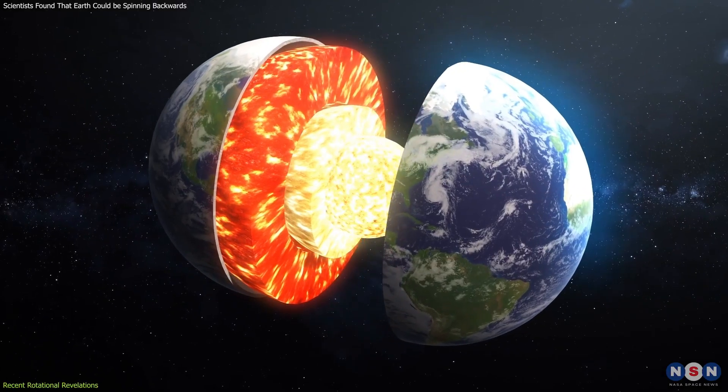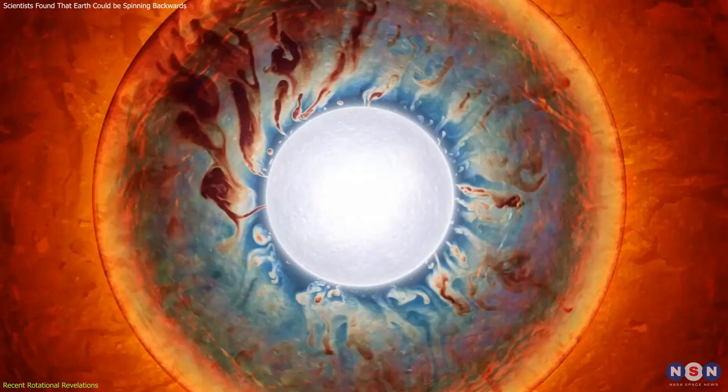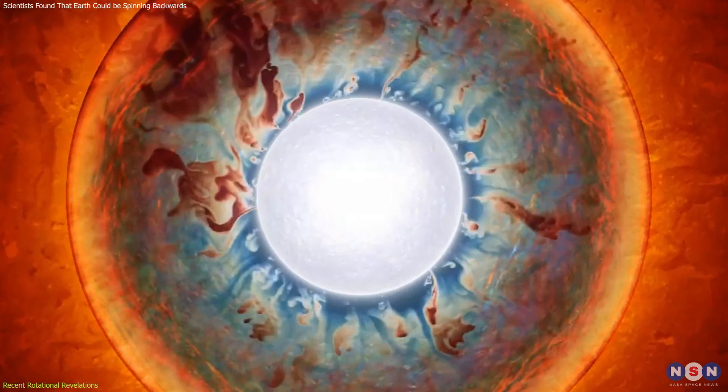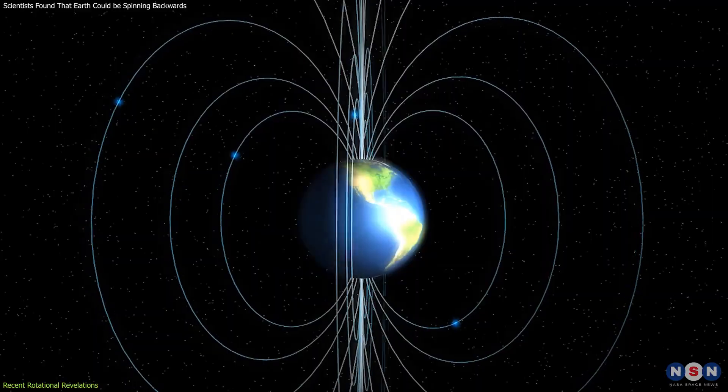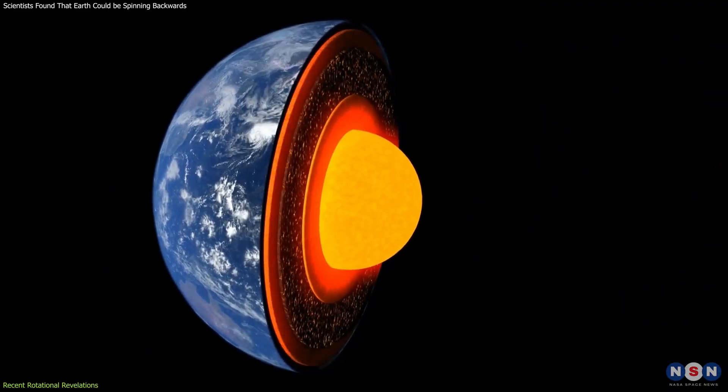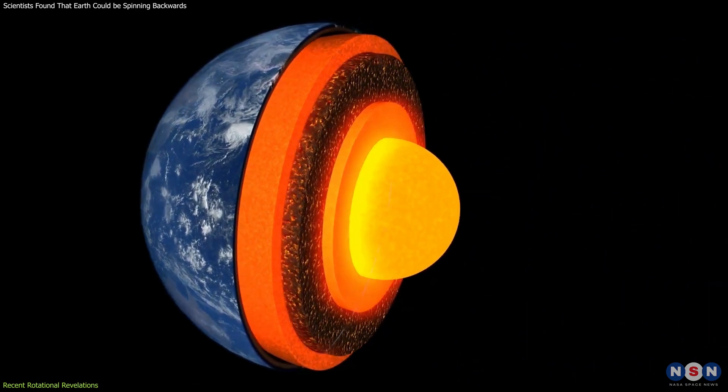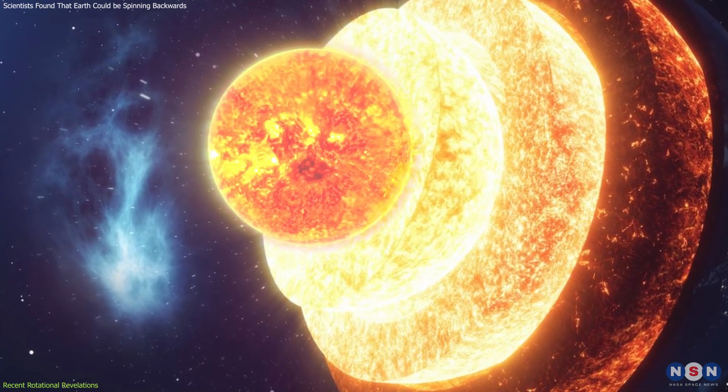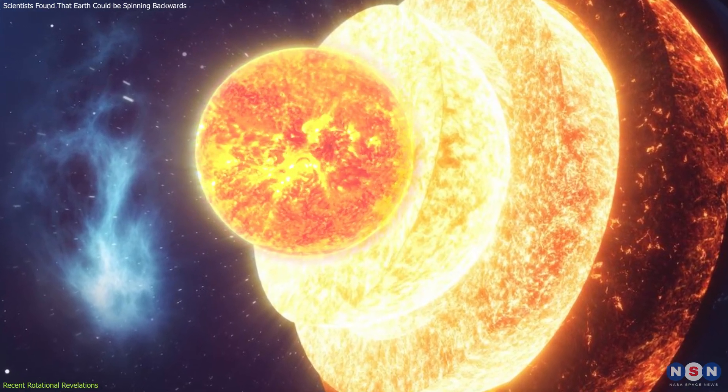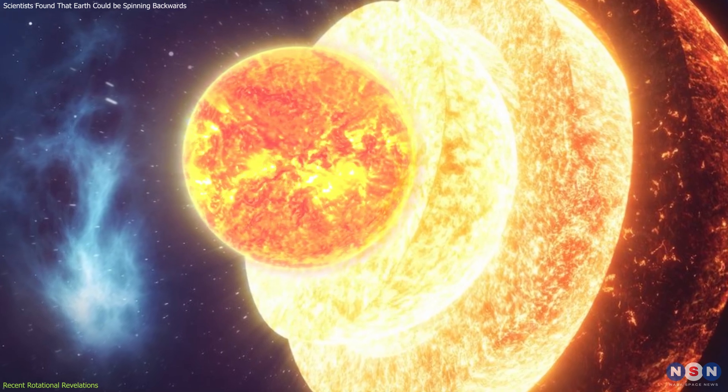Researchers have developed models to explain these observations. One such model suggests that the inner core experiences torques from the magnetic field and gravitational interactions with the mantle. These forces contribute to the core's cyclical rotational pattern, which appears to span approximately 70 years.